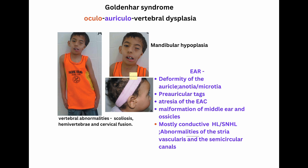'Auricular' refers to the ear — including preauricular tags, anotia, microtia, and hearing loss. Hearing loss is usually conductive, as in Treacher Collins syndrome, but sensorineural hearing loss can also occur. Abnormalities of the stria vascularis and semicircular canals are also noted. Ear abnormalities ranging from anotia to preauricular tags are considered the most common malformation in Goldenhar syndrome.